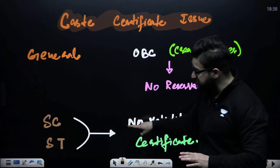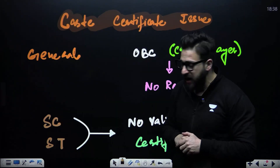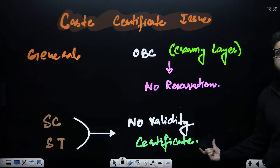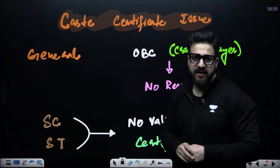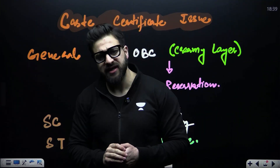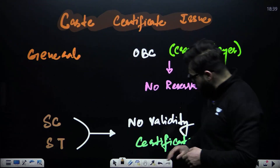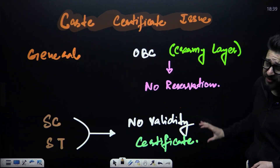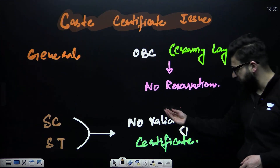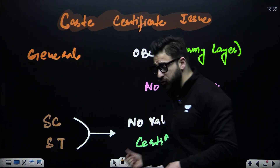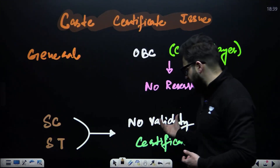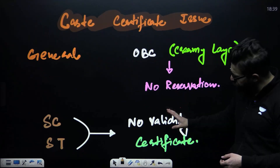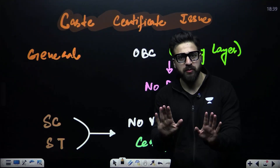The second category is SC and ST. These students will already have their CAST certificates. You can simply upload that CAST certificate — there is no problem with that. Some CAST certificates have no validity or expiry, so you can upload them without any issue.